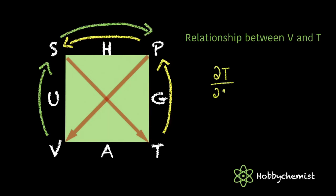The relation is ∂T/∂P at constant entropy equals ∂V/∂S at constant pressure.